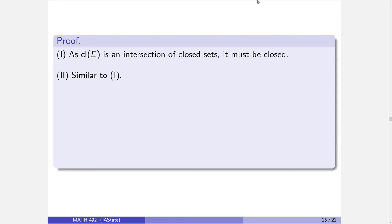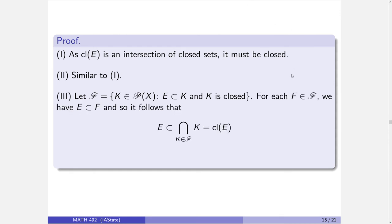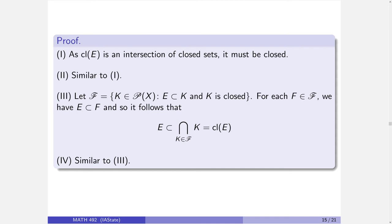I'm going to prove everything about the closure — everything with the interior is analogous. The closure, it turns out, in practice is usually a little bit more important. First thing to note: how is the closure defined? It's the intersection of all closed sets that contain E. It's the intersection of closed sets — it's closed. Done. Same thing for the interior — it's a union of open sets, done.